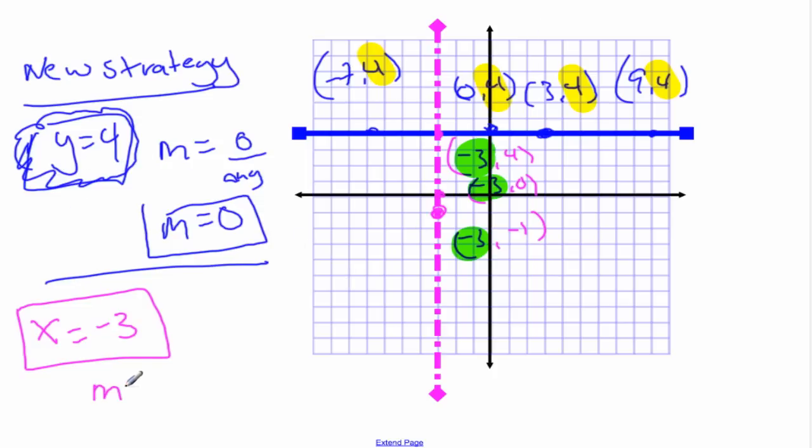And the slope of this line. Well, this one's a bit more confusing, isn't it? Because this time the run is 0. So, you get like any number over 0. And that is undefined. So, the slope we call undefined. You can't divide by 0.